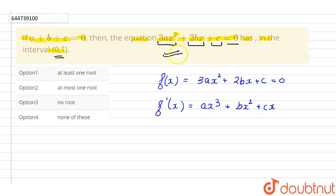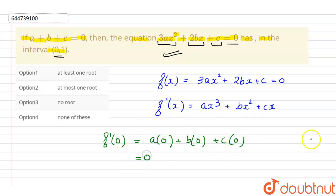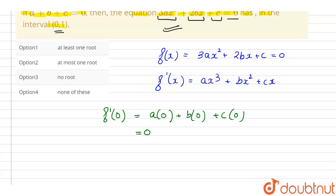Now we have to find the root between the intervals 0 to 1. So let us put the value of x as 0 into F(x). F(0) will be equal to a times 0 plus b times 0 plus c times 0, which equals 0.